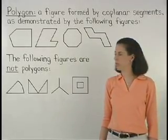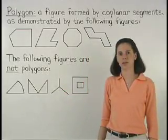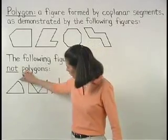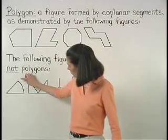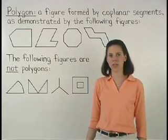However, the second group of figures shown are not polygons. The figure on the far left is not a polygon because of the curve that forms part of the figure, and polygons can be composed only of segments.